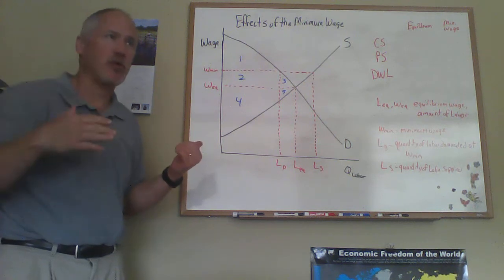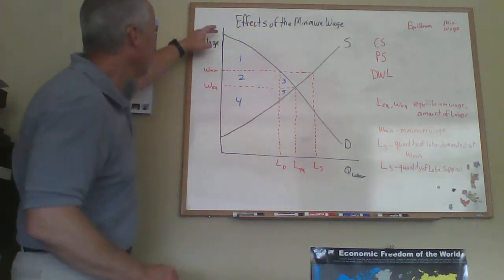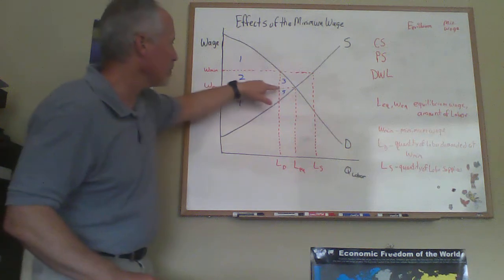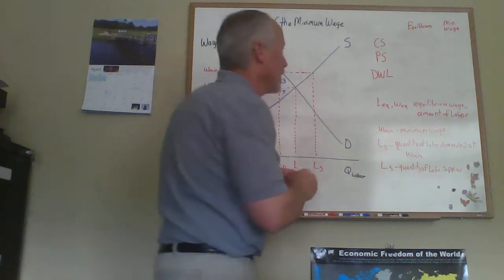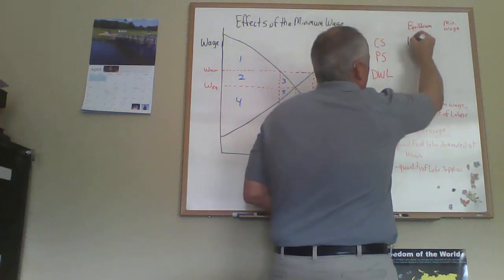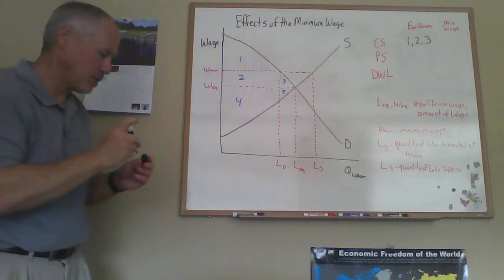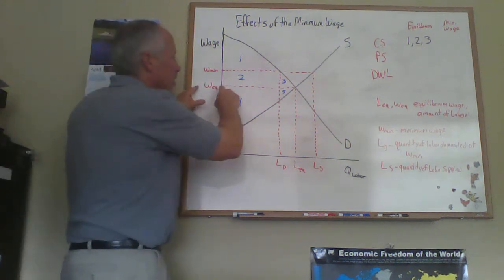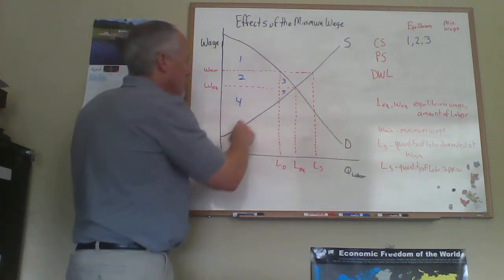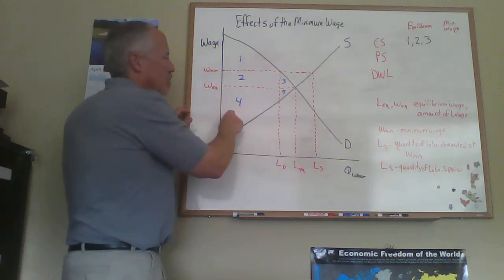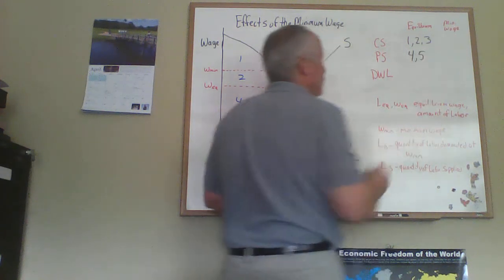Consumer surplus is the area below the demand curve and above the price. In equilibrium, that triangle — below the demand curve and above the equilibrium price — includes areas 1, 2, and 3. So consumer surplus at the equilibrium would be areas 1, 2, and 3. Producer surplus at the equilibrium wage would be the area below the price and above the supply curve, which is the trapezoid area 4 and the little triangle 5. So producer surplus in equilibrium would be areas 4 and 5.